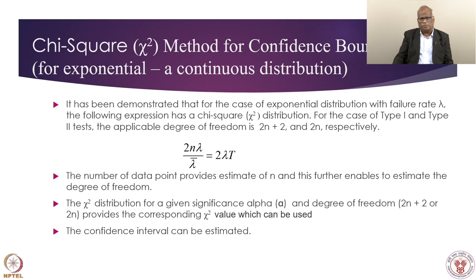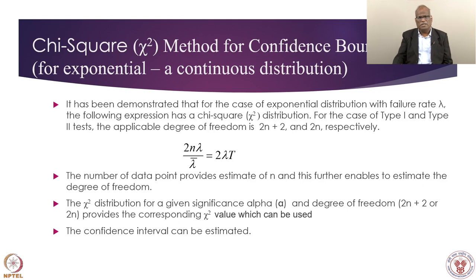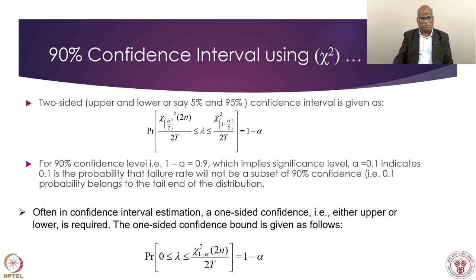Chi-square is a very well-established and traditional approach to estimate the confidence interval. For Type 1 and Type 2 tests, the applicable degree of freedom is relevant — in simple terms, how many observations you have and how many minimum observations are required to get the required confidence. The approximation 2nλ / λ-bar = 2λt is used for applying chi-square methods for exponential distributions, and this enables estimation of the degree of freedom.